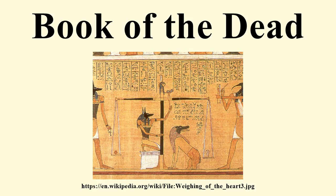By the XVII Dynasty, the Book of the Dead had become widespread not only for members of the royal family, but courtiers and other officials as well. At this stage, the spells were typically inscribed on linen shrouds wrapped around the dead, though occasionally they are found written on coffins or on papyrus. The New Kingdom saw the Book of the Dead develop and spread further. The famous Spell 125, the weighing of the heart, is first known from the reign of Hatshepsut and Thutmose III, c. 1475 BCE. From this period onward the Book of the Dead was typically written on a papyrus scroll, and the text illustrated with vignettes.